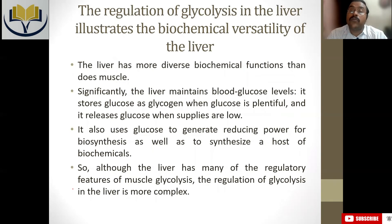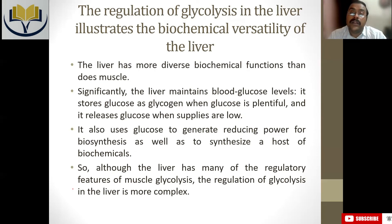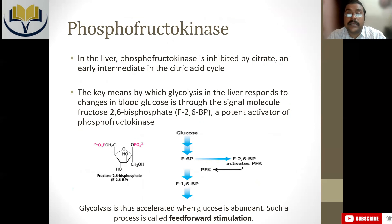In liver, glycolysis can be regulated, but that regulation is a little bit different from that of muscle. Liver has more biochemical functions. In muscle the main purpose of glucose is to produce energy, but in liver the main purpose of glucose is not to produce energy but to control its concentration in blood. If blood glucose level rises, the liver stores glucose in the form of glycogen, and if glycogen storage is also full, it converts glucose into fatty acids via acetyl-CoA.